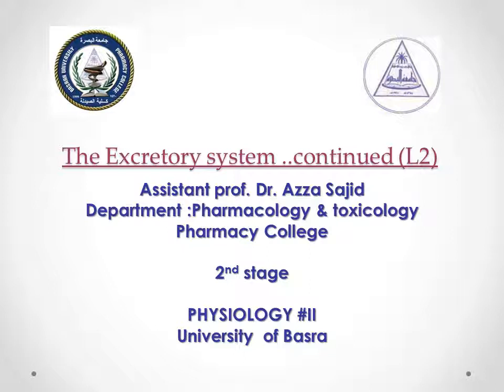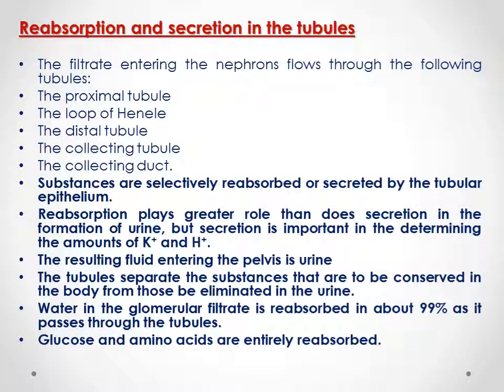This is lecture 2 of the excretory system, a continuation of the previous lecture related to renal information. Re-information includes three processes: filtration, reabsorption, and secretion. This lecture relates specifically to reabsorption and secretion in the tubule. The filtrate entering the nephrons flows through the following tubules: proximal tubule, loop of Henle, distal tubule, a collecting tubule, and finally collecting ducts.